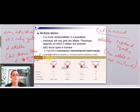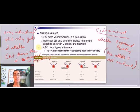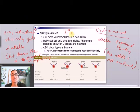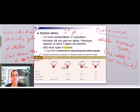In the previous examples, there were only two alleles present in the population — like the purple allele and white allele, or tall and dwarf. With blood typing, there are actually three alleles present in the population: the A allele, the B allele, and the O allele. Each individual still only gets two, but that determines their blood type.